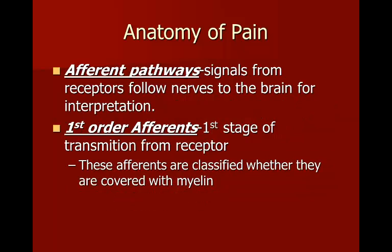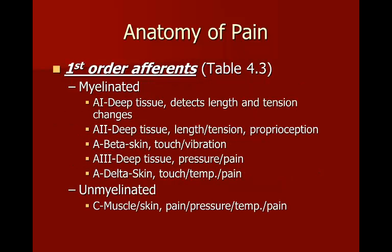The afferent pathways are the highways from the receptor to your brain. Signals from the receptors follow nerves to the brain for interpretation. First-order afferents are the first stage of transmission from the receptors, classified by whether they are myelinated or unmyelinated. Myelinated fibers transmit impulses more quickly. Examples of myelinated afferents: A1 (deep tissue, length and tension changes), A2 (deep tissue, length, tension, proprioception), A-beta (skin, touch, vibration), A3 (deep tissue, pressure and pain), and A-delta (skin: temperature, touch, and pain). A3 and A-delta transmit quick pains — those sharp, burning, stabbing sensations.